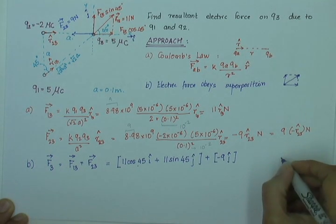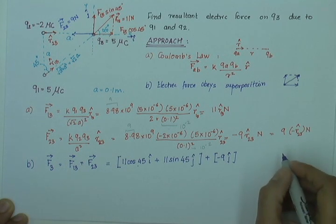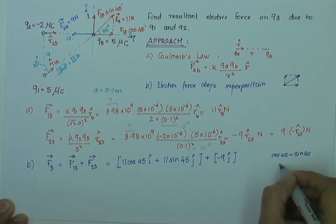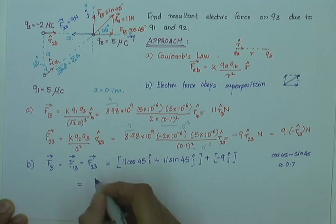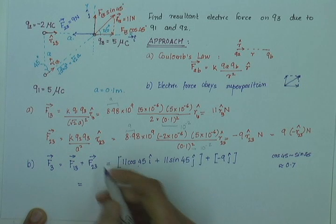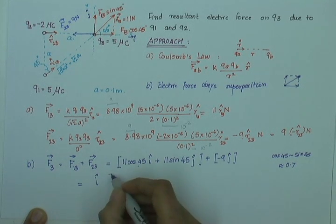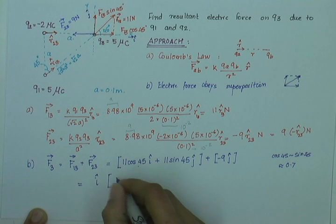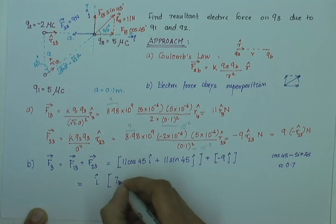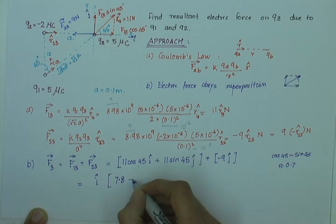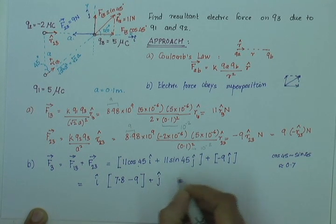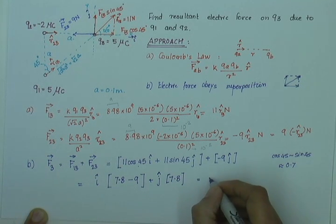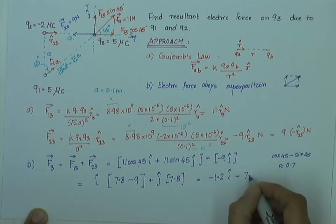Cos 45 and sin 45 is approximately 0.7. This comes down to i-cap into 11 into 0.7 comes approximately equal to 7.8. So, this is 7.8 minus 9 and plus j-cap into again, it is the same thing, 7.8. And so, my resultant is minus 1.2 i-cap plus 7.8 j-cap.